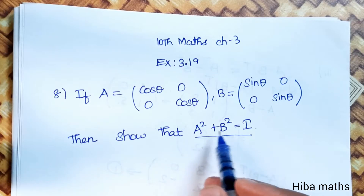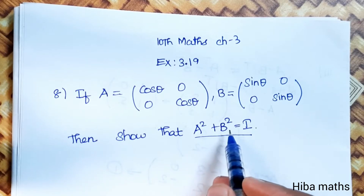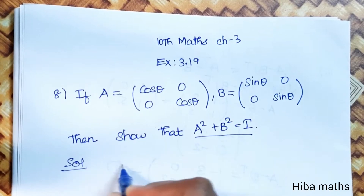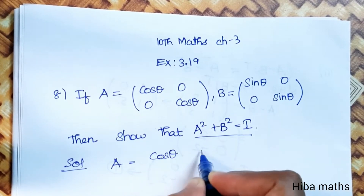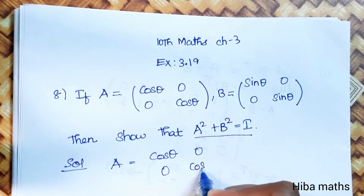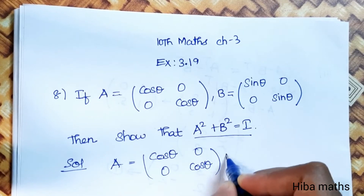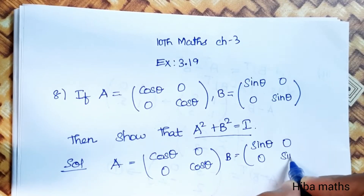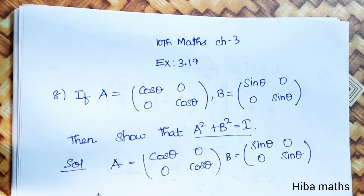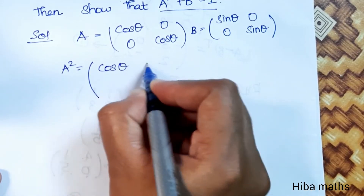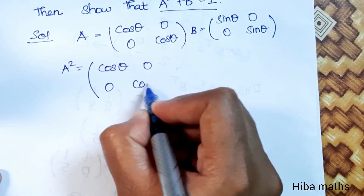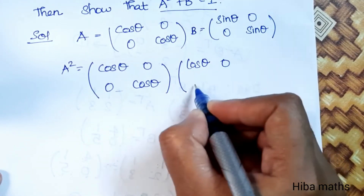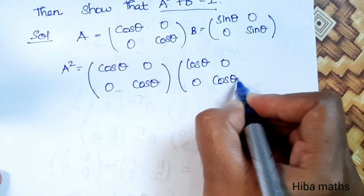So we will find A squared and B squared separately, then add them together. Solution: A's value is [cos theta, 0; 0, cos theta] and B's value is [sin theta, 0; 0, sin theta]. For A squared, we multiply the A matrix by itself — A into A.